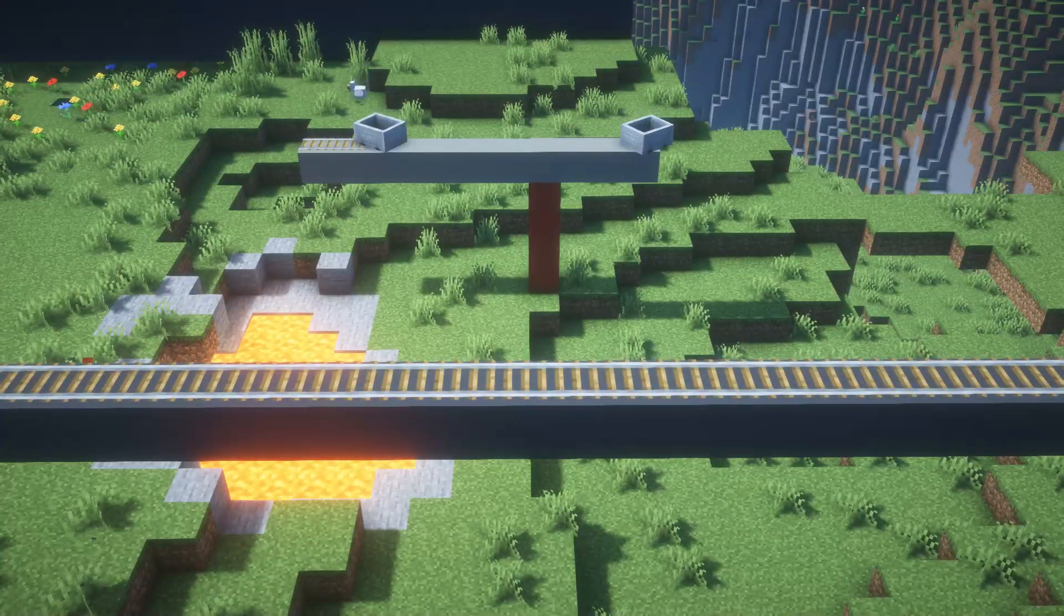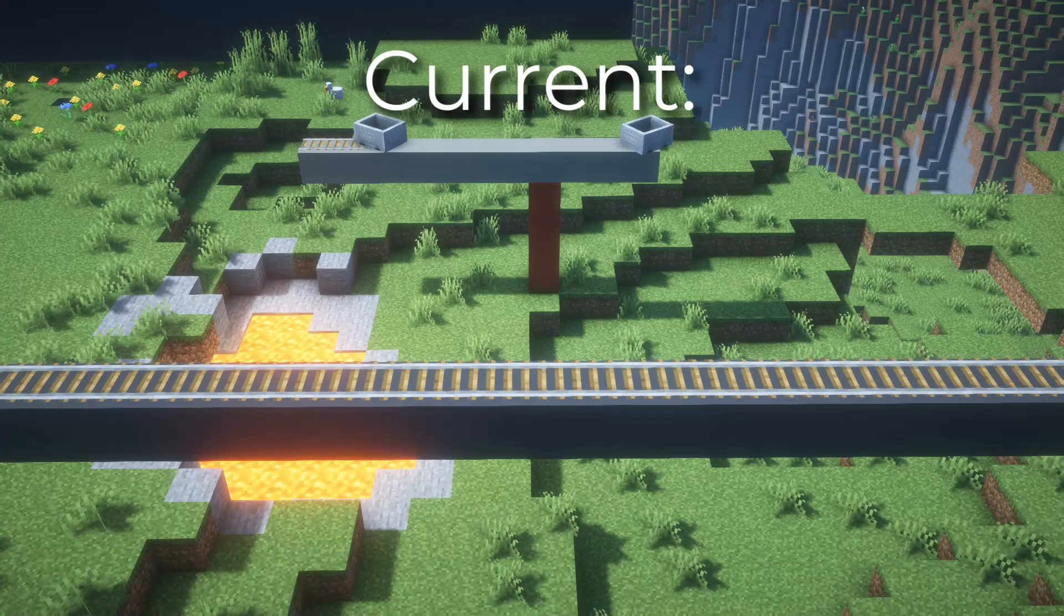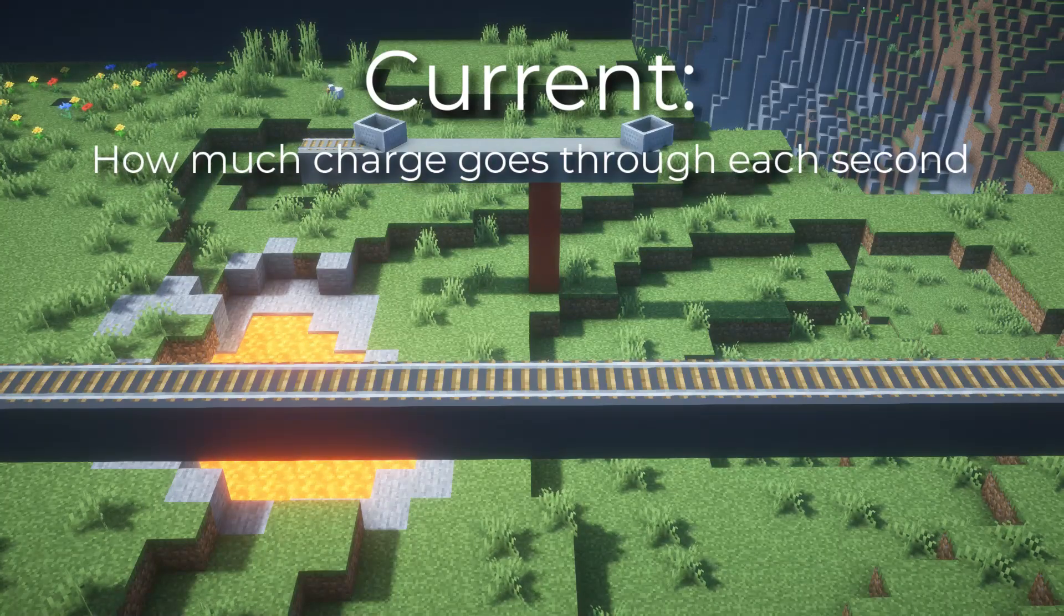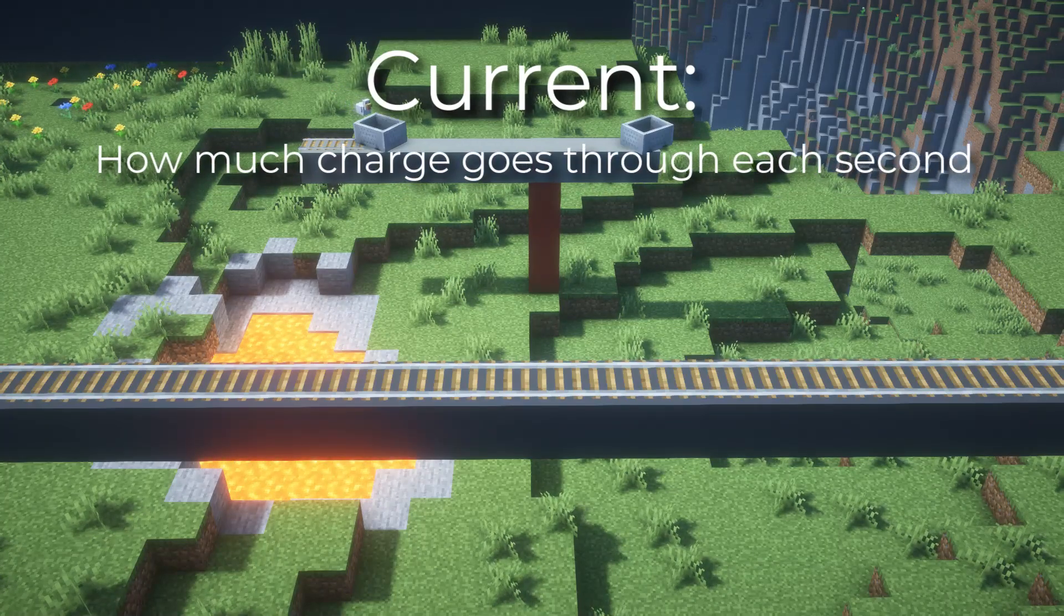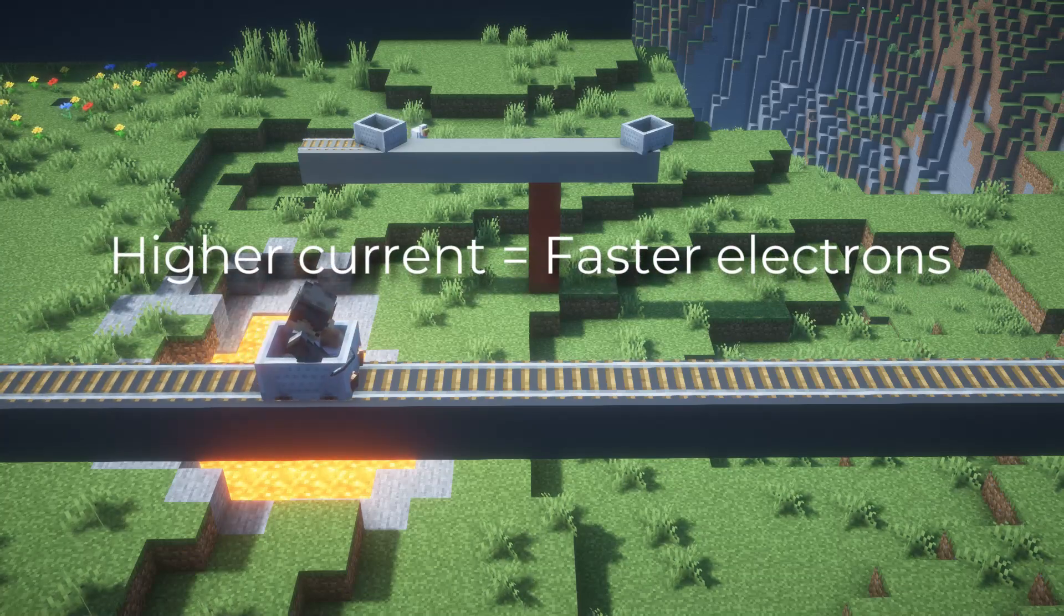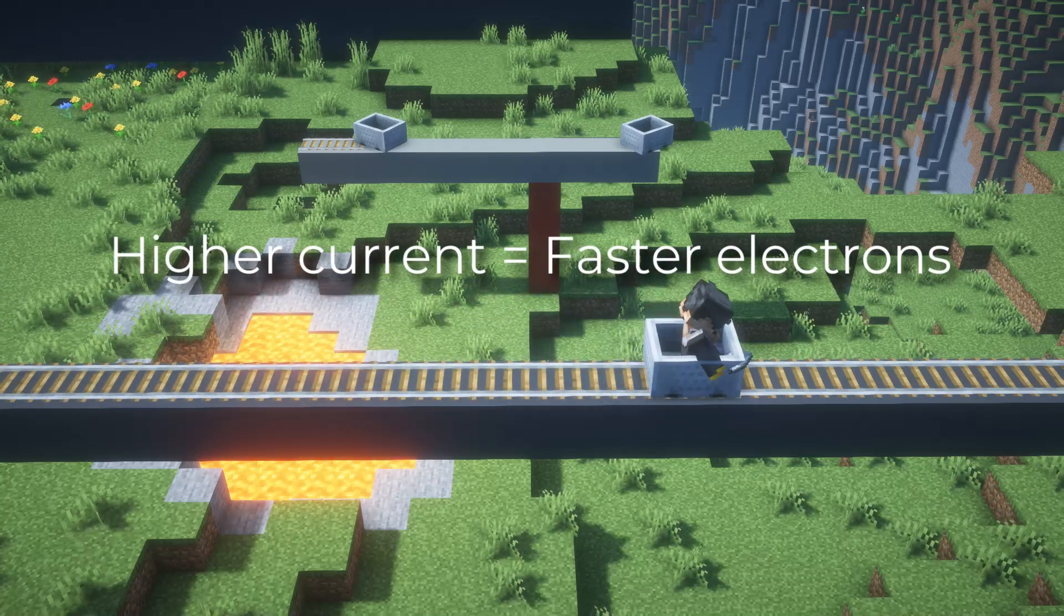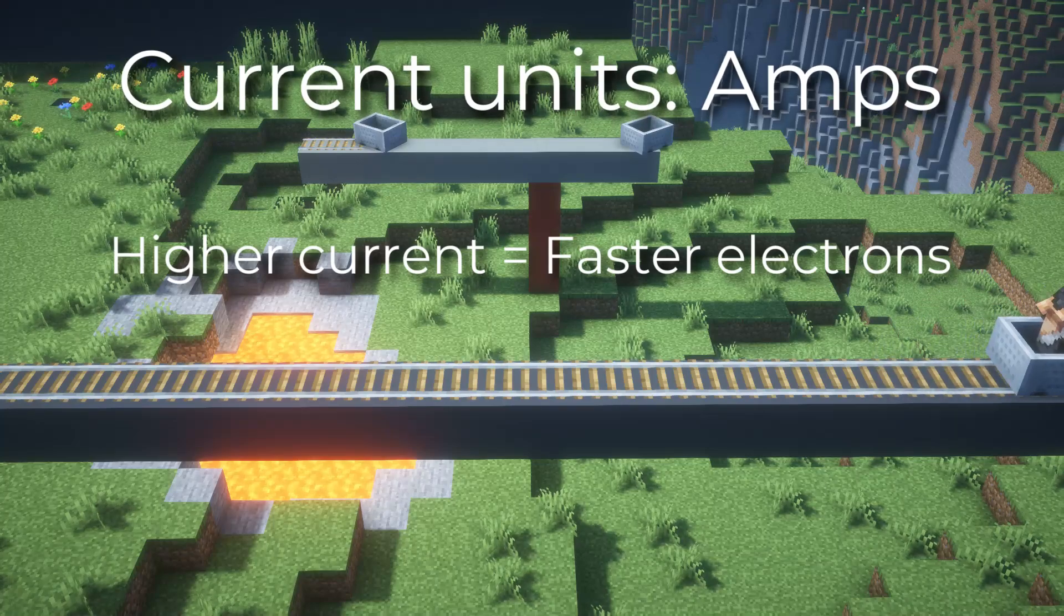Now onto the current. Current is the easiest thing to visualize as it's just the charge that goes to a given point every second, so the higher the current, the higher the amount of electrons going through. It's a lot faster and the unit for current is amps.